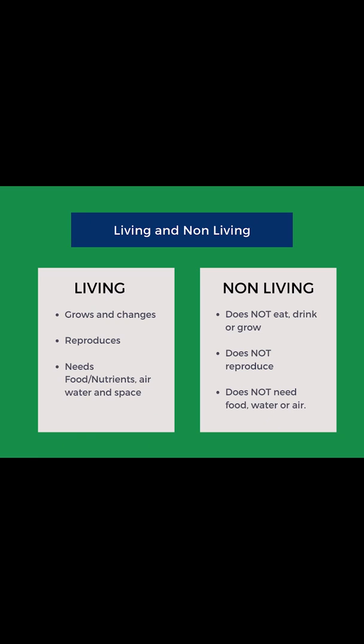A living thing grows, changes, and makes other living things like itself, also called reproduction. It needs air, food, water, and space or shelter to stay alive.